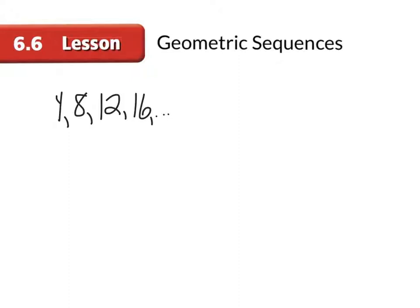In a geometric sequence, we start with something like 3, then go to 9, then 27, 81. Here in a geometric sequence, we're multiplying by 3 every time — that's what a geometric sequence is. You're multiplying or dividing to get from one term to the next.